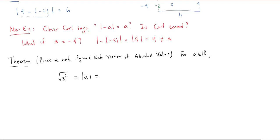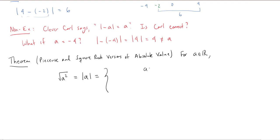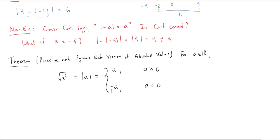So if you start with a being negative four, when you square it you get 16, and taking the square root gives four — which is not the same as a, but is the negative of a. That's exactly what the absolute value does in that situation: the absolute value of negative four is four, which is the negative of negative four. Writing out what we just said gives us the piecewise version of absolute value: if a is positive or even zero, then the absolute value of a is just a. If a is negative, then the absolute value returns the negative of a. This is because if you take a negative number, the distance to zero is positive — you put a negative sign in front to turn it positive.